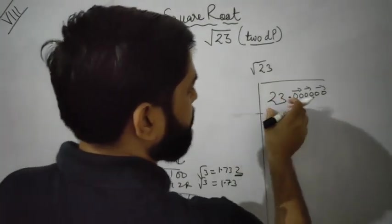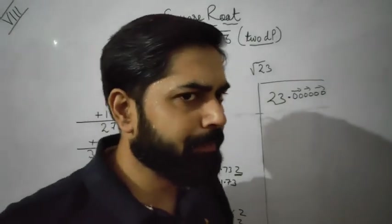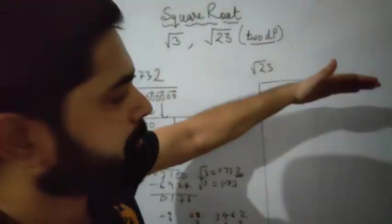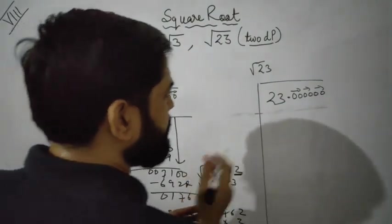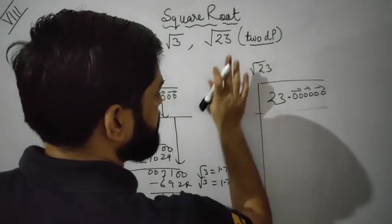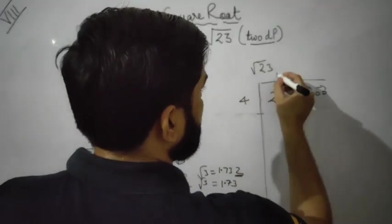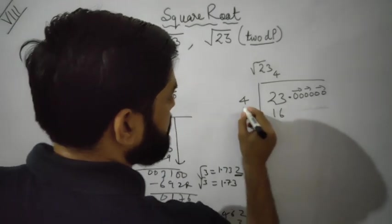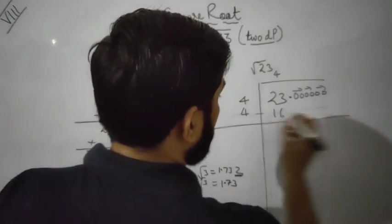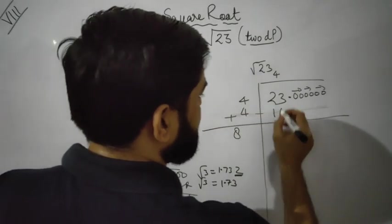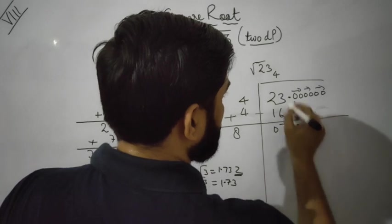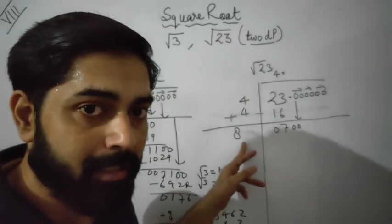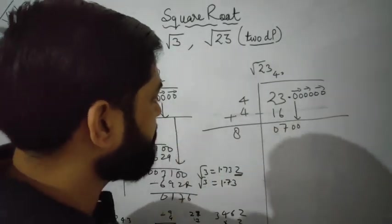Draw the lines and find the perfect square of 23. 23 is not a perfect square, but we find the nearest perfect square of 23, which is 16. So 4 times 4 is 16. Write the same number and add — this gives 8. Then 23 minus 16 is 7. This is zero, so we bring down two zeros and use the decimal point. Now we have 700.